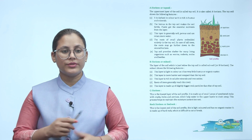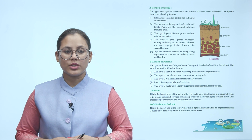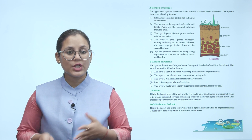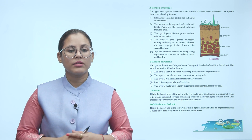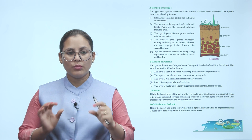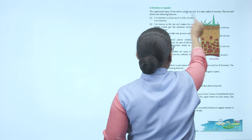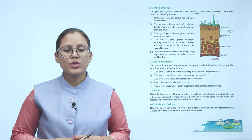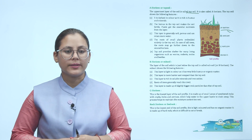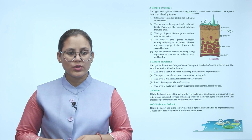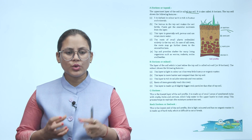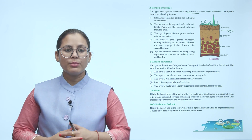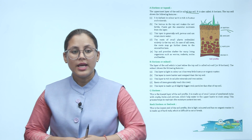A horizon or topsoil: The uppermost layer of the soil is called topsoil, also called A horizon. It is darkest in color as it is rich in humus and minerals. The humus in the topsoil makes the soil fertile. Plants get essential nutrients from this layer. This layer is generally soft, porous and can retain more water. The roots of small plants are embedded entirely in the topsoil. In the case of tall trees, roots may go further down to the second horizon. Topsoil also provides shelter for many living organisms such as worms, rodents, moles and beetles.